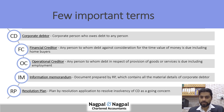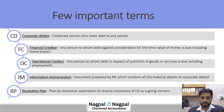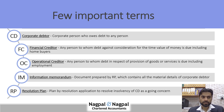Information Memorandum is a document which contains all the material details of the corporate debtor, prepared by the Resolution Professional. A Resolution Plan is something presented by the Resolution Applicant on the basis of the Information Memorandum. A Resolution Applicant is someone who is trying to resolve the insolvency of the corporate debtor — some other company that infuses money or does some kind of restructuring to resolve the insolvency.